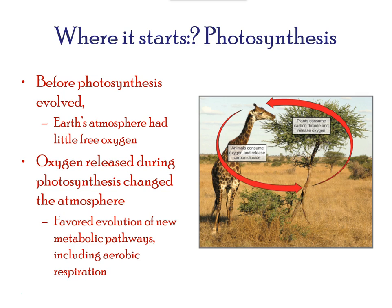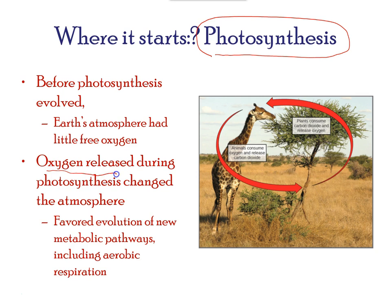Photosynthesis is the process where solar energy is used in a series of complex reactions to be stored in a glucose molecule. Prior to the presence of oxygen in the atmosphere, there were some reactions that stored energy in other molecules, though the energy stored in these molecules was not as abundant. With the release of oxygen in the atmosphere, some favorable conditions helped the process of photosynthesis to evolve.